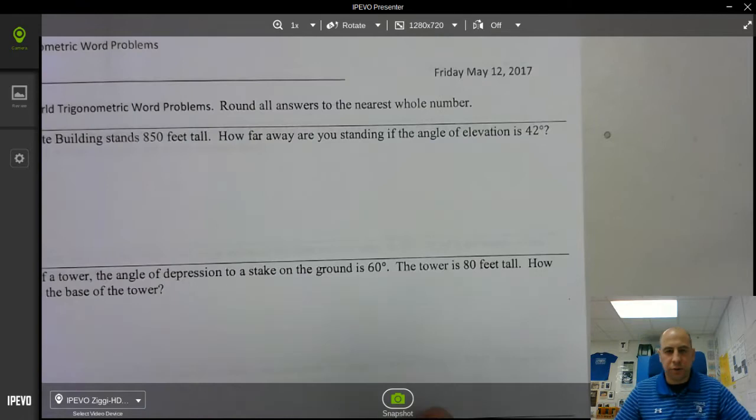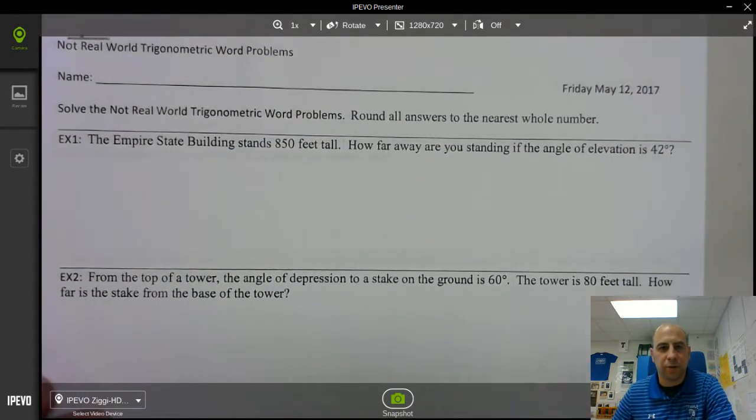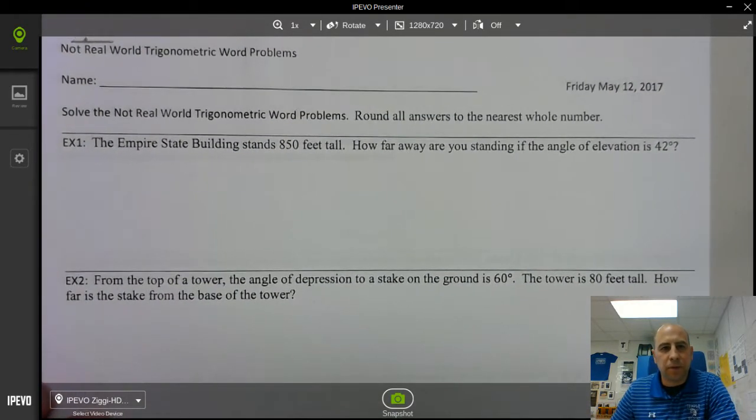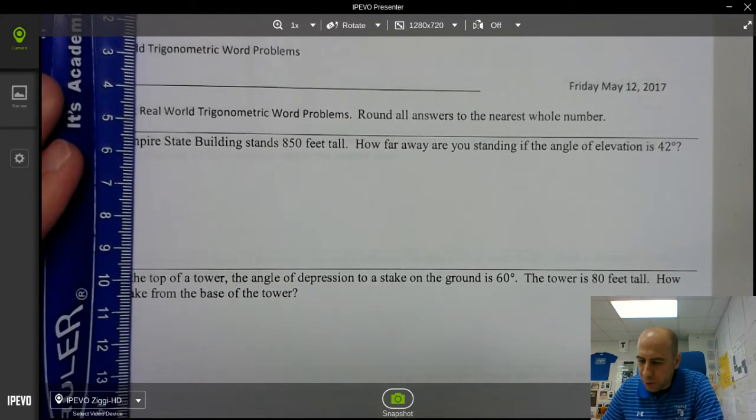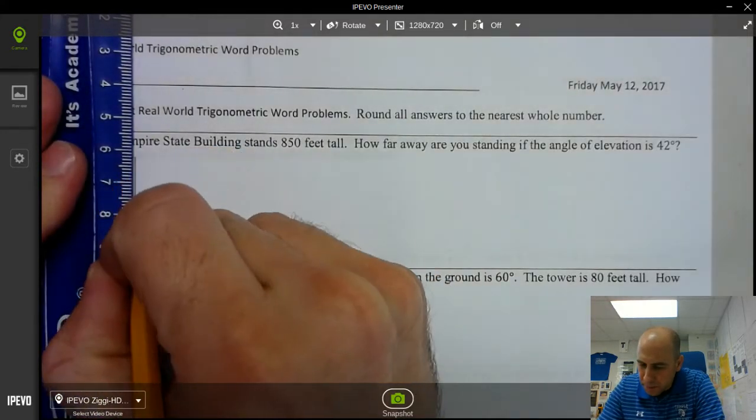Alright now that your notes are updated let's take a look at the examples. Alright example one the Empire State building stands 850 feet tall. How far away are you standing if the angle of elevation is 42 degrees? Alright so step one we're going to draw the picture.